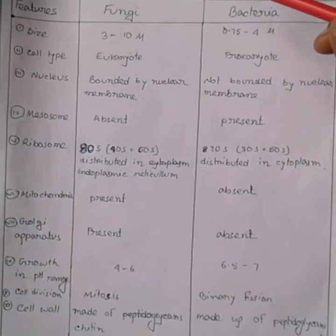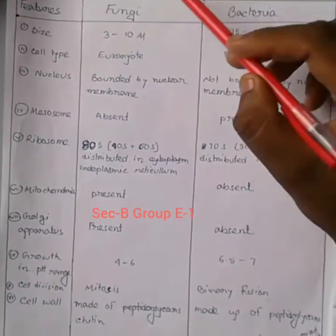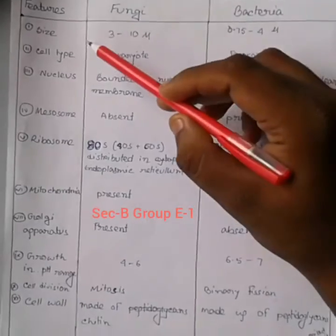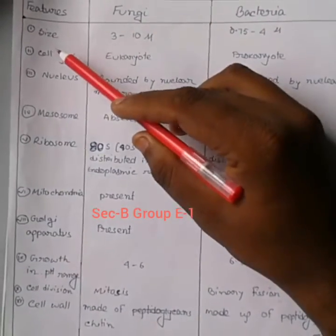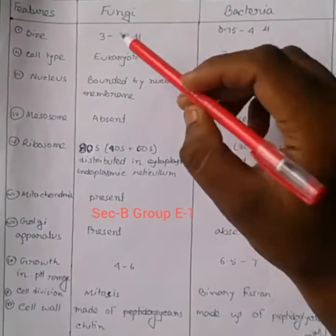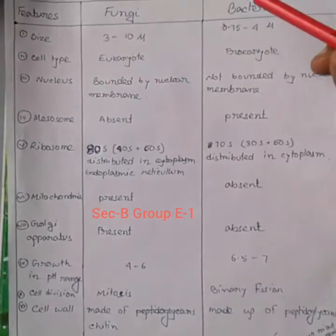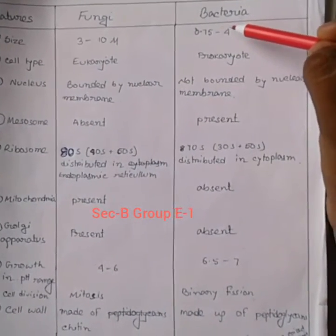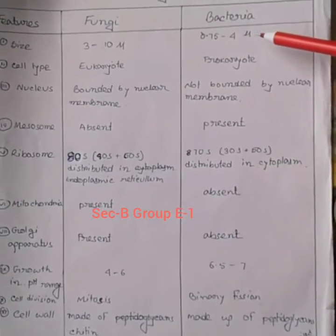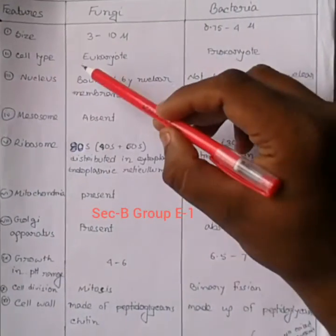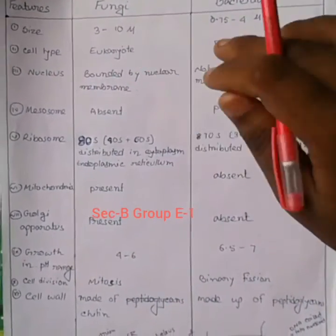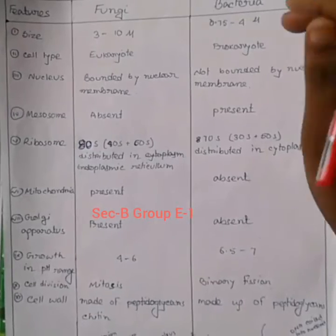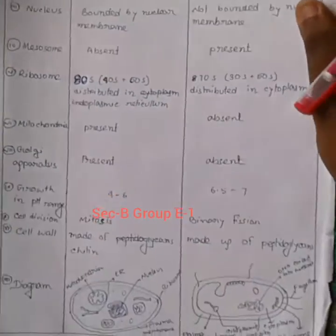Here we are going to discuss the difference between fungi and bacteria. The size of fungi is between 3 to 10 micron, and bacteria is 0.75 to 4 micron. The cell type of fungi is eukaryotic, and bacteria is prokaryotic.